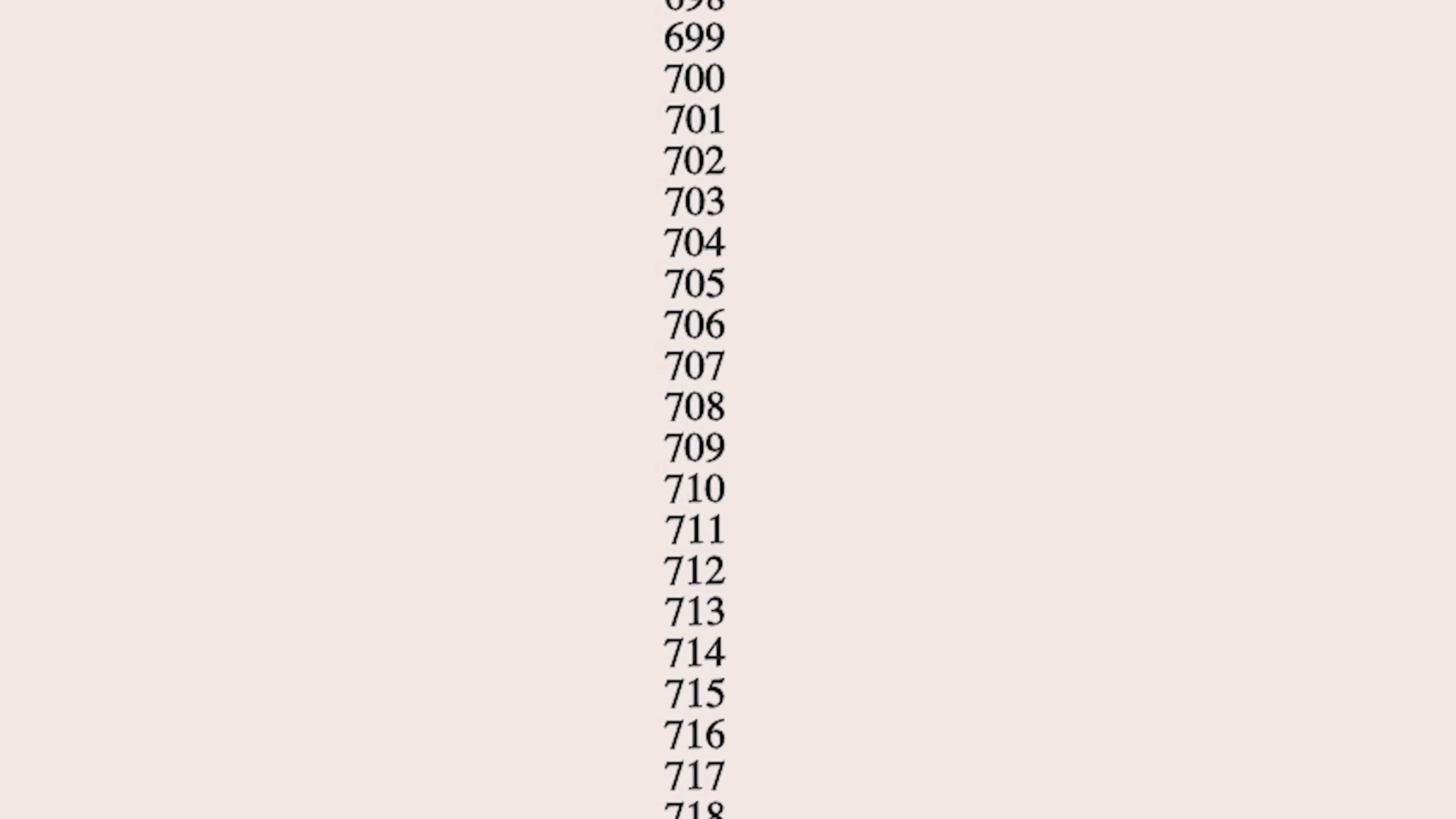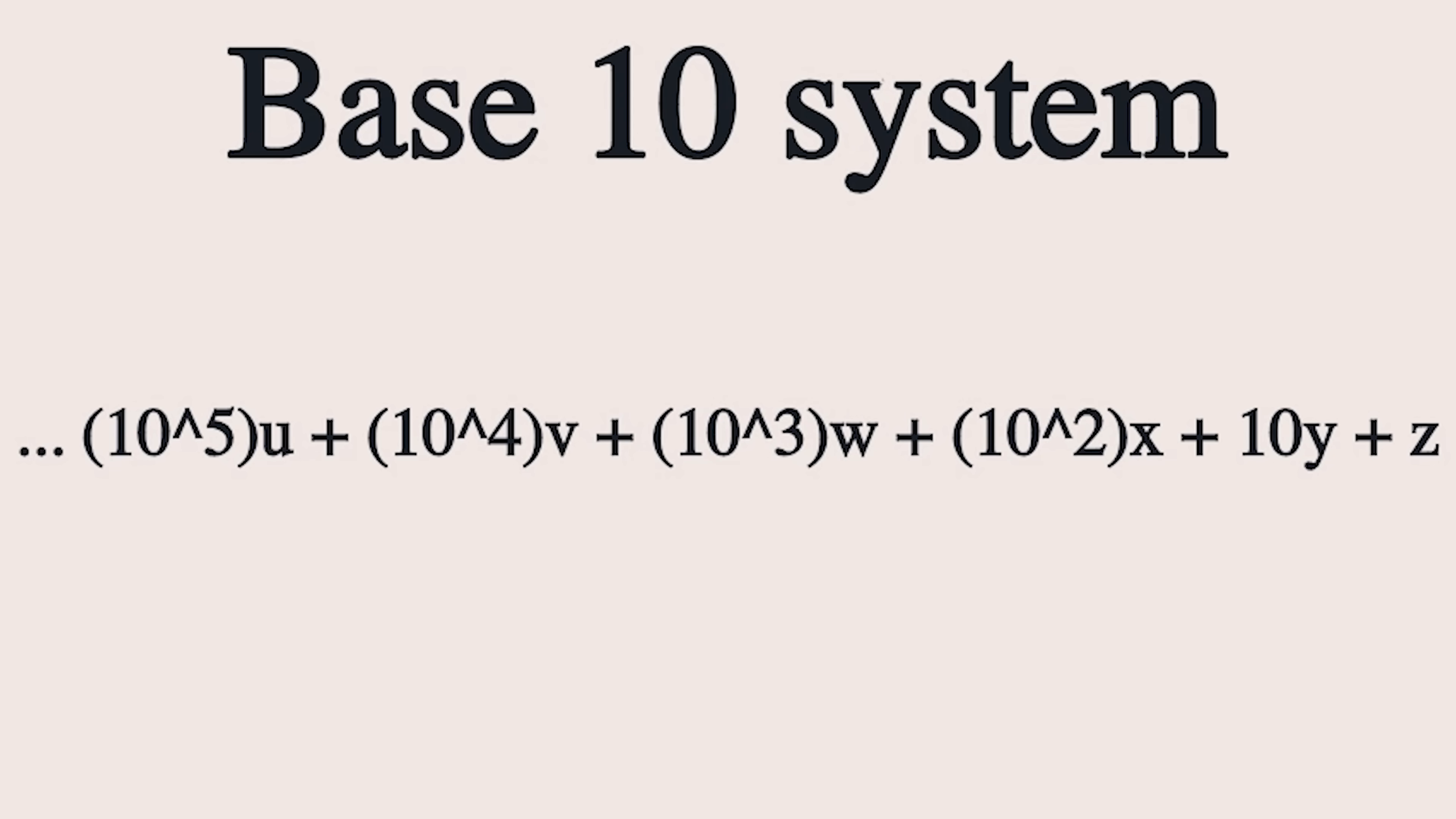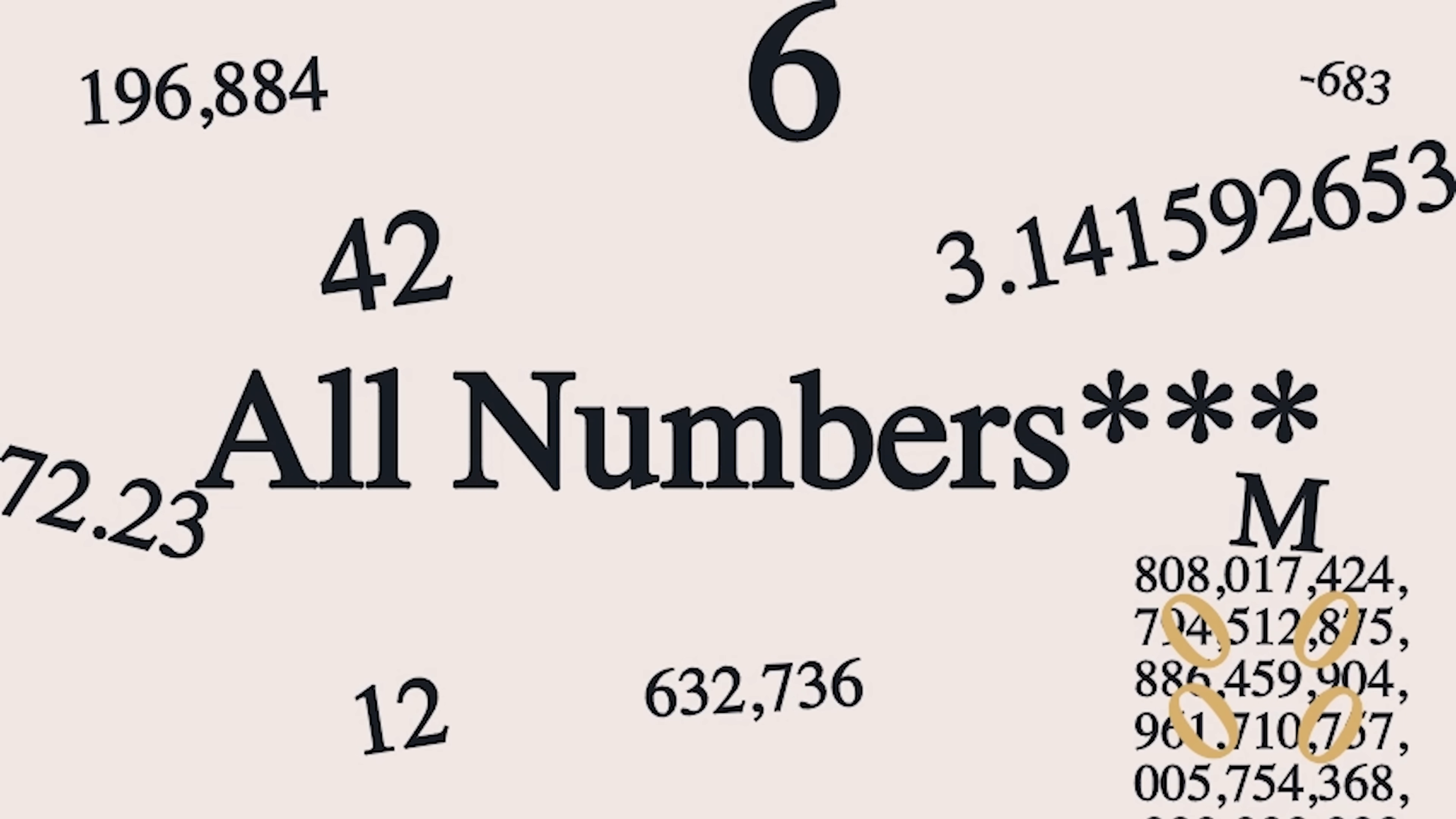The number system that we use is called the Arabic numeral system, or sometimes the Hindu Arabic numeral system. It's a base 10 system, which means that we use 10 symbols, 0 to 9, to represent all numbers.